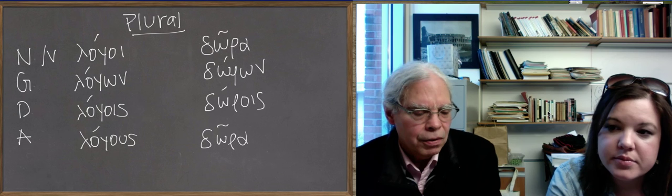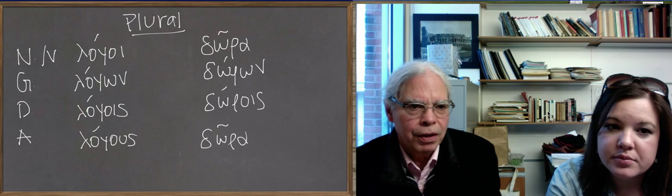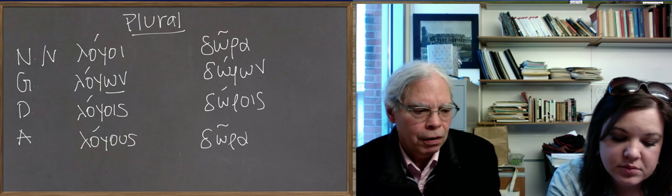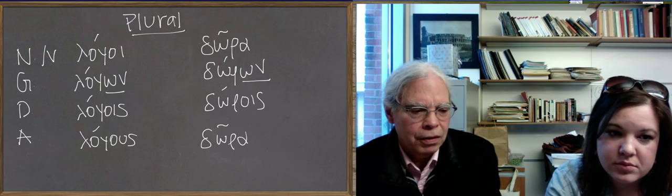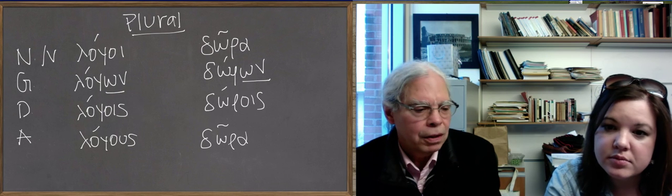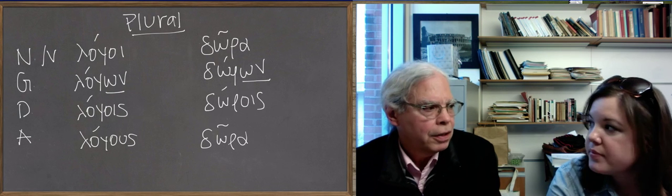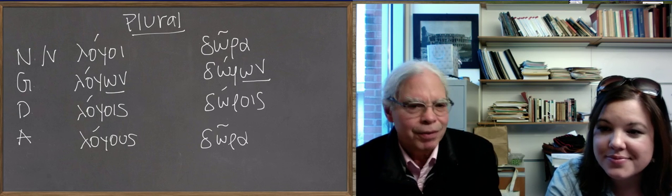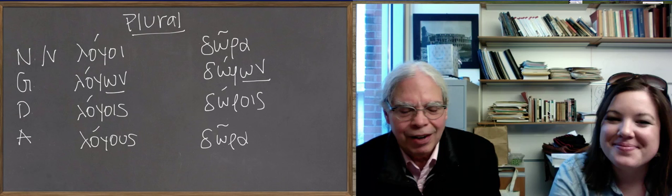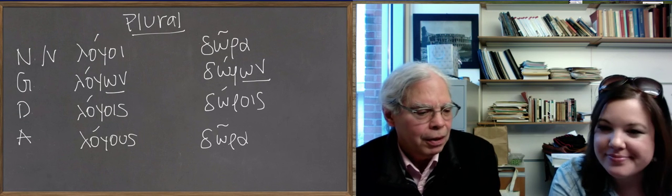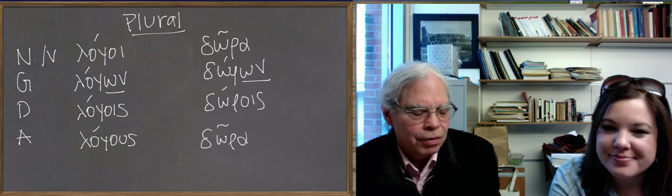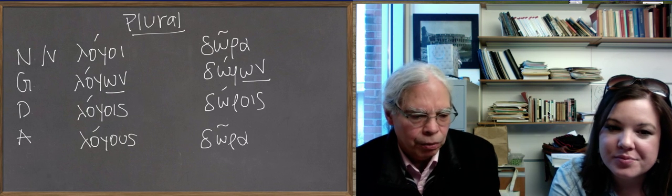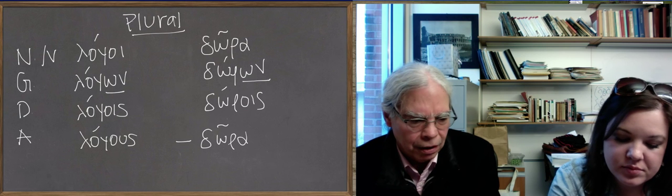In the neuter, you may notice that the genitive plural ending is own, again, for both logos and doron. And the genitive plural ending own is true of all the declensions in the Greek. When we get to the third declension, it's also own. So learning that ending will work for you. Every single Greek noun that's in the own is a genitive plural, no matter what class it belongs to.